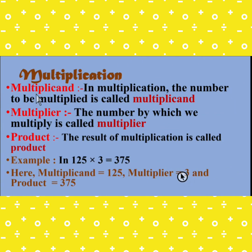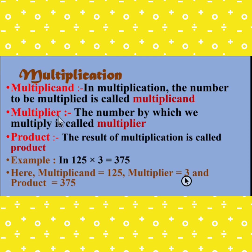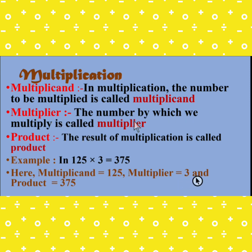Multiplication. The first term is multiplicand — the number to be multiplied is called the multiplicand. The second term is multiplier — the number by which we multiply is called the multiplier.